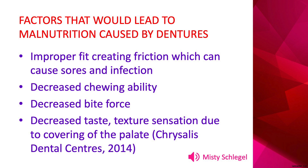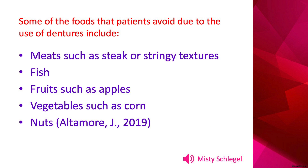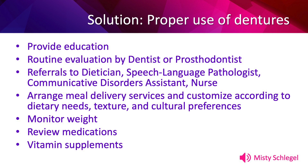Dentures can create a decreased chewing ability, a decreased bite force, and decreased taste or texture sensation due to covering of the palate and the tongue. Additional complications with denture use include that they can slip, move, or fall out as the person speaks or chews. They may change a person's appearance, stimulate a person's gag reflex, and they can create speech problems. Some of the foods that patients avoid due to the use of dentures include meats such as steak or stringy meat textures, fish, fruits such as apples, vegetables such as corn, and nuts — all of which contribute to decreased nutritional intake causing malnutrition in the older adult.